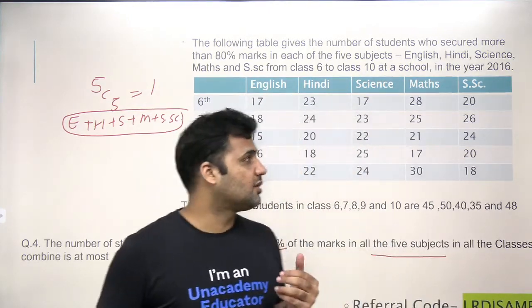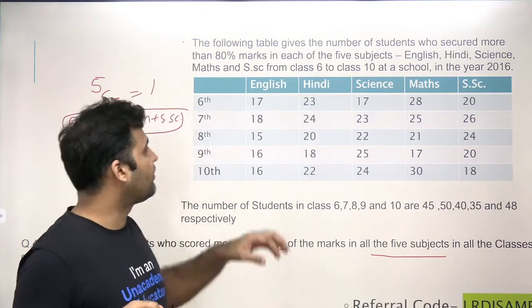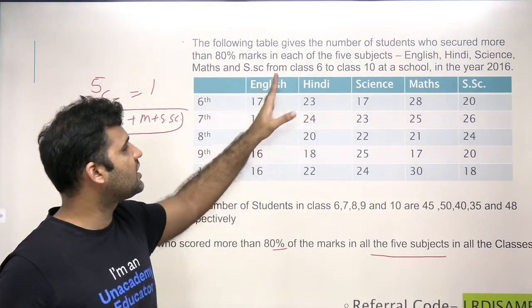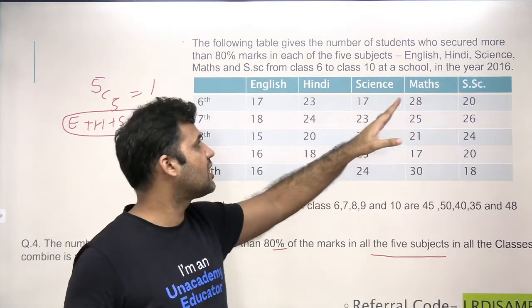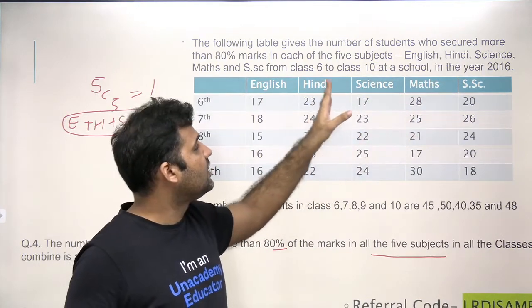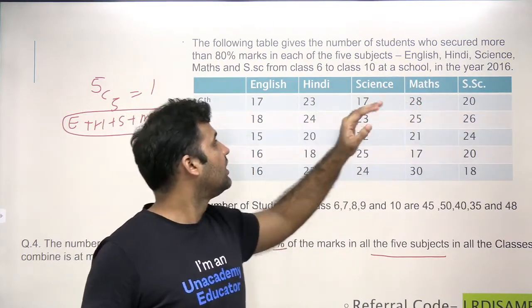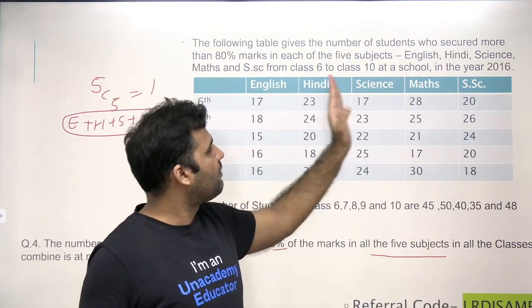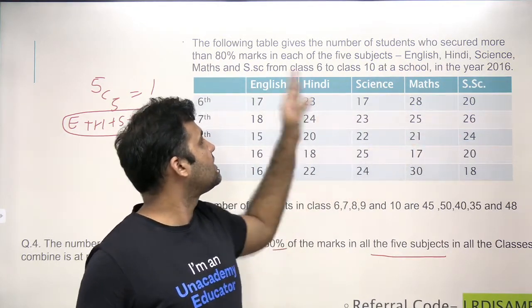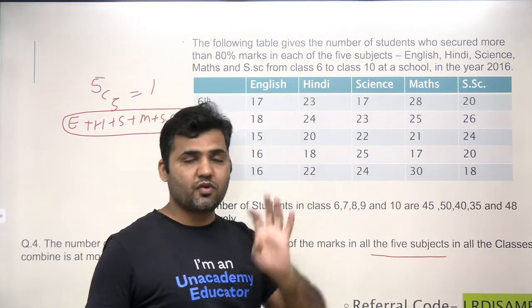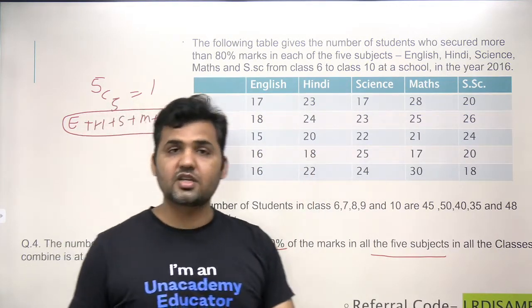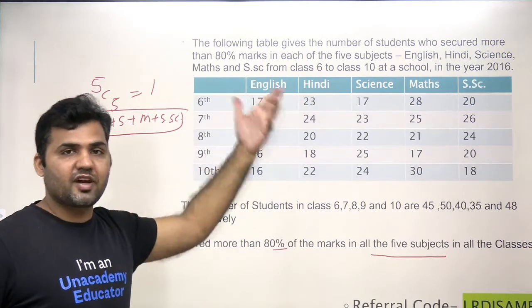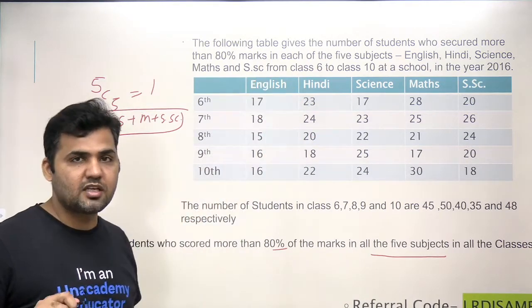But when I talk about four subjects, there will be five combinations — 5C4 = 5. For example: English, Hindi, Science, and Math is one combination; Hindi, Science, Math, Social Science is another; Science, Math, Social Science, English is another; and so on. So for four subjects I'm talking about five combinations, but if I'm talking about five subjects, it's 5C5 = 1.